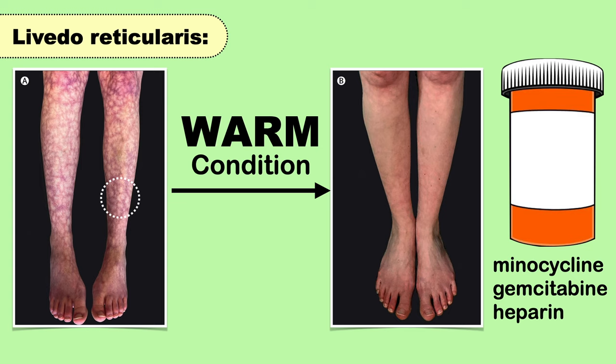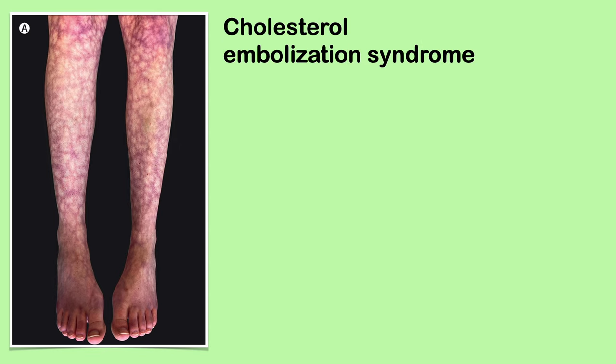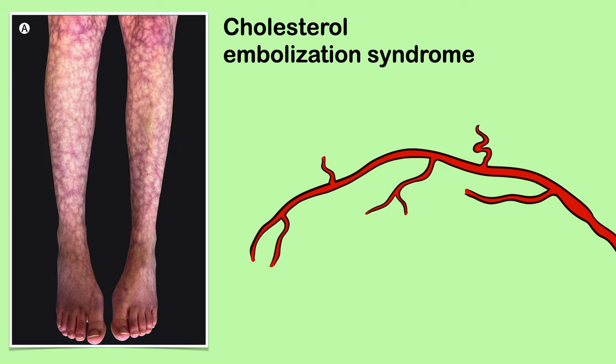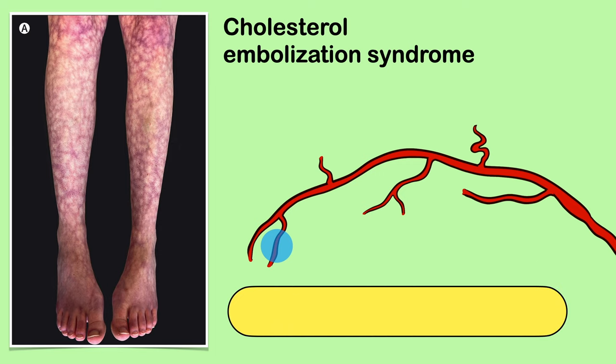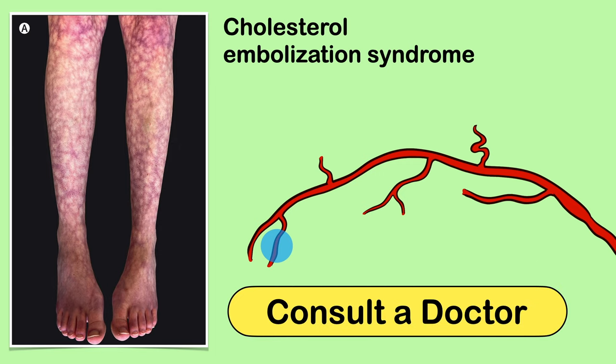If one of these medications is causing this net-like pattern, it's usually nothing to worry about. However, this net-like pattern can also be a sign of a disease called cholesterol embolization syndrome, which occurs when small arteries become blocked. If you notice this type of skin change, consult a doctor to find out whether you have an undiagnosed disease.